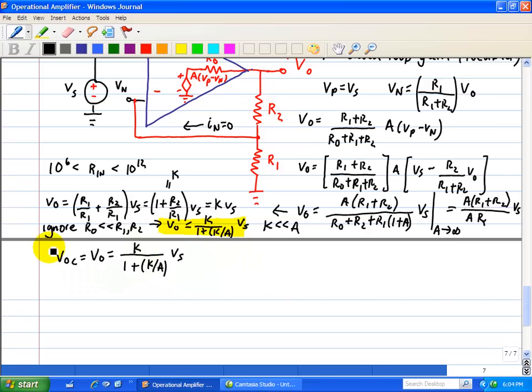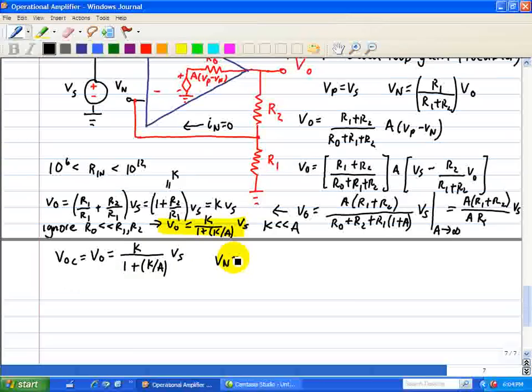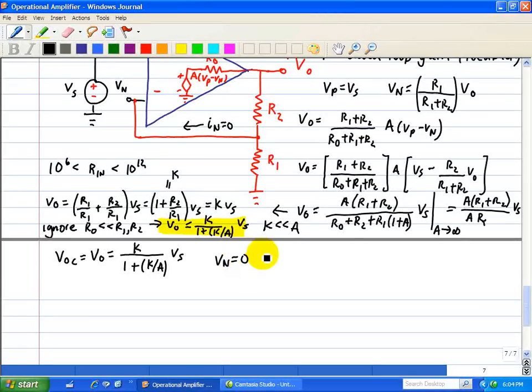Now we need to calculate the short circuit current in which we place the short at the output. When we do this, that means that VN is equal to 0 when we do a short circuit current.